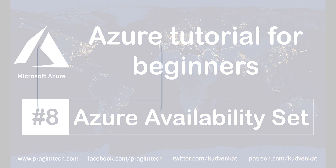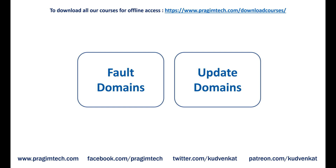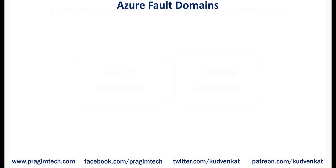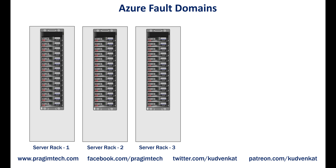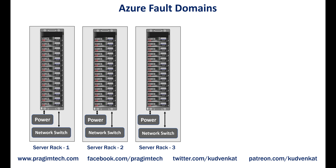Before that, let's understand fault domains and update domains. What does an Azure data center contain? In simple terms, it contains several racks of servers. Each rack in turn may contain several servers with its own power supply and network switch. In reality, server racks are much more complicated — they may be equipped with redundant power supplies and network switches. However, to keep this example simple, let's just say a rack contains 15 to 20 physical servers with its own power supply and network switch. So you can think of each rack of servers as a separate fault domain.